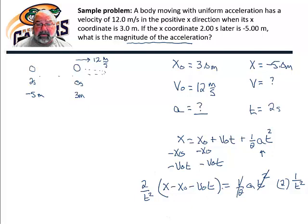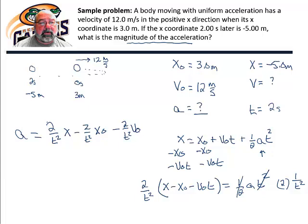So now I have to distribute and solve. Okay, so I have acceleration is equal to 2 over t squared times x minus 2 over t squared times x0 minus 2 over t squared times v0t. So I'm going to eliminate that t and substitute in my numbers.